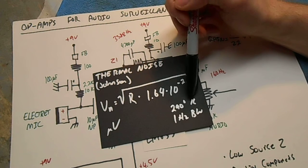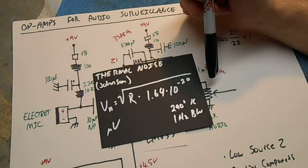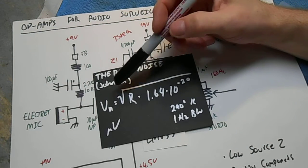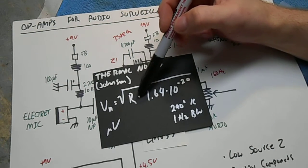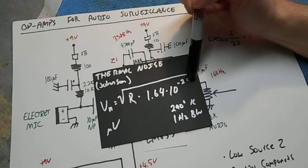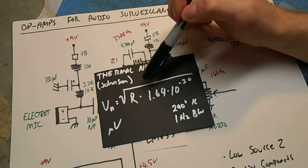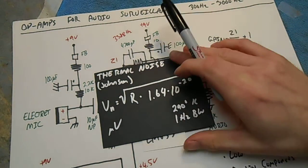We can assume a 290 degree Kelvin temperature, which is room temperature, and a 1 hertz bandwidth. That reduces the equation to the square root of R times 1.64 times 10 to the negative 20th, where R is your resistor or impedance value you want to calculate the thermal noise for. And that's usually in microvolts.